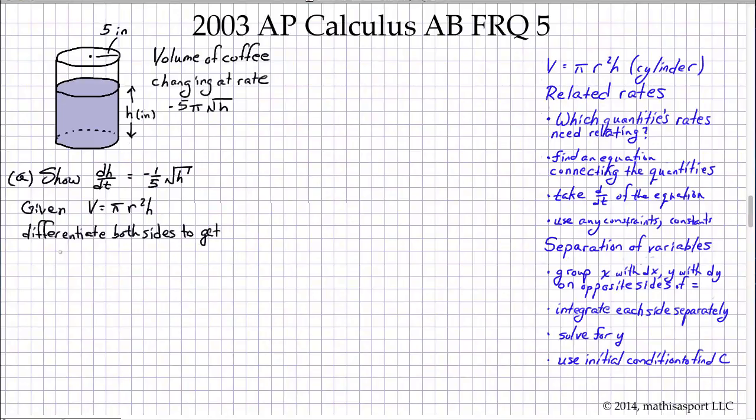And what do we get? We get dV/dt equals, now we're going to have to use the product rule to differentiate here. I'm going to pull out the π, and now I have the derivative of the first, 2r(dr/dt) times the second, plus the derivative of the second, dH/dt, times r².